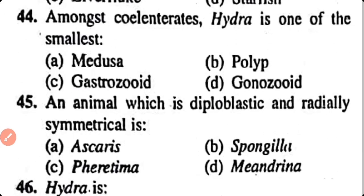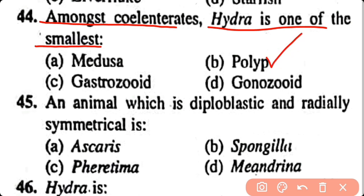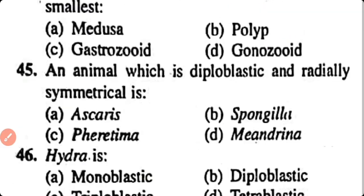Question number 44. Among the cnidarians, Hydra is one of the smallest: medusa, polyp, gastrozooid, gonozooid. Option B. Hydra is the smallest polyp.